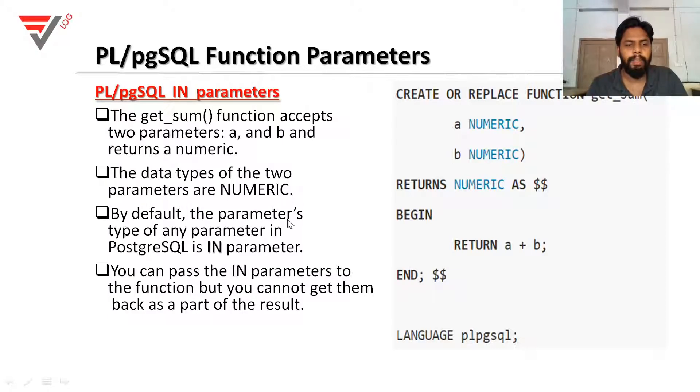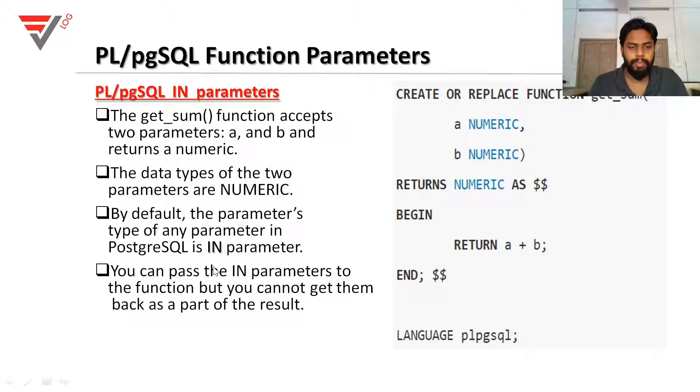The get_sum function accepts two parameters A and B, and returns a numeric. The data types of the two parameters are numeric. By default, the parameter type of any parameter in PostgreSQL is IN parameter.